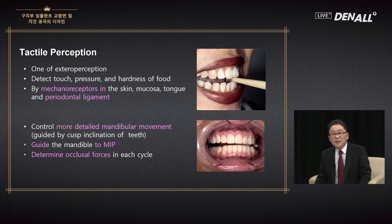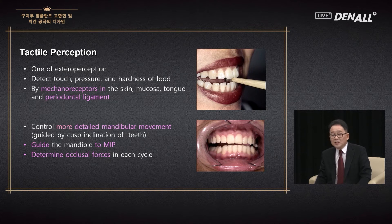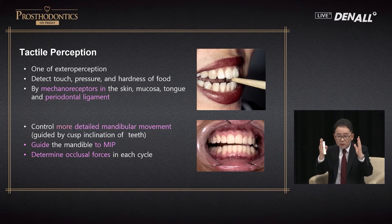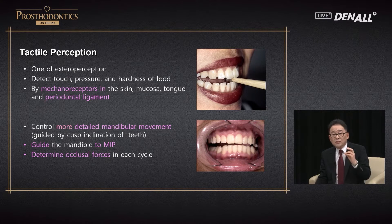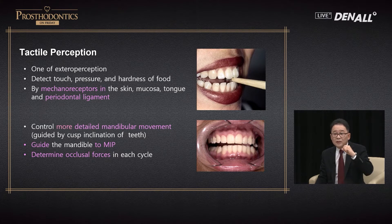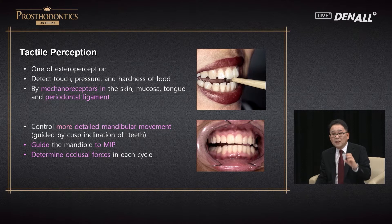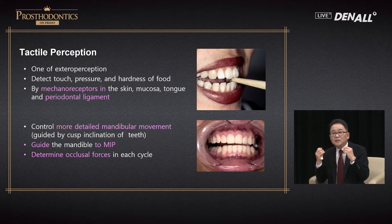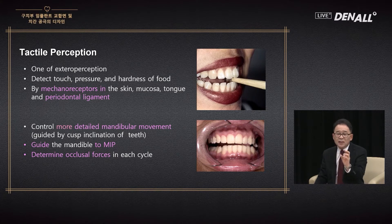Tactile perception in the mouth — the ability to detect if something tiny comes in — is determined by the mechanoreceptors in the skin, mucosa, and tongue. For a complete denture, CR-CO and CR-MIP need to be aligned, because there is no PDL in the edentulous patient. Guiding the mandible from CR to MIP is not easy. The mechanoreceptors serve as a defense mechanism to control the occlusal force at each cycle. The lack of PDL is the biggest difference between implant and natural tooth in terms of function.